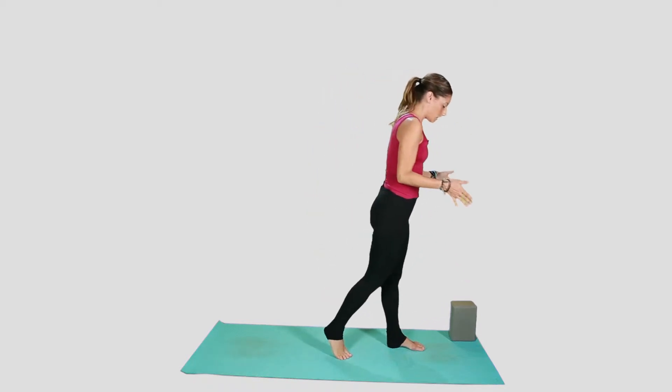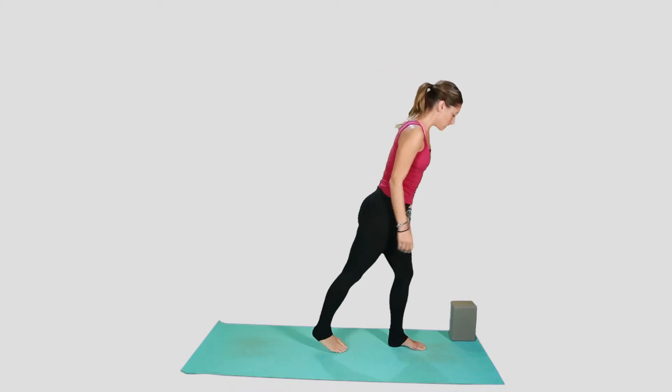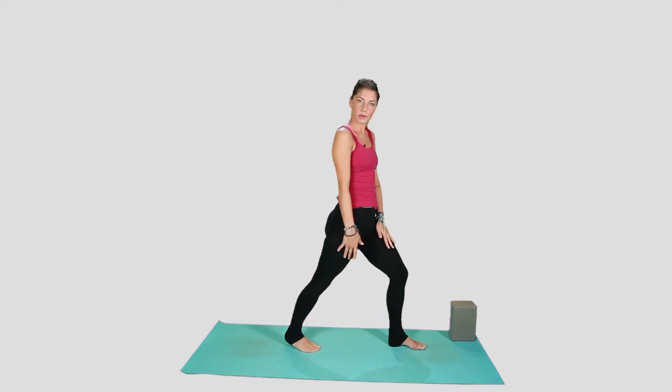So you're going to turn towards the short edge of your mat here. You're going to take a slight bend in that front knee. Some people come up from a crescent or a runner's lunge. We're just going to start standing up.